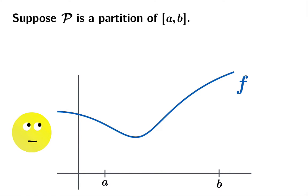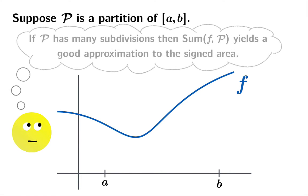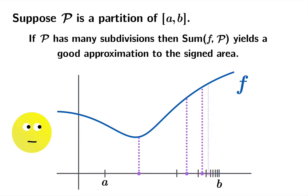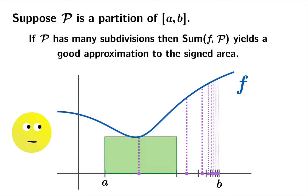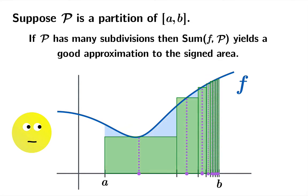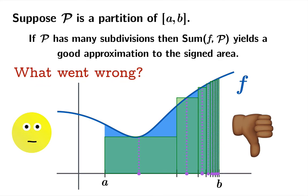Now suppose you've got a partition of an interval. You might think to yourself well if P has many subdivisions then the Riemann sum is going to give you a good approximation to the signed area. But let's take a look at an example. What if you chopped up an interval this way and then you calculated the Riemann sum associated to that partition?